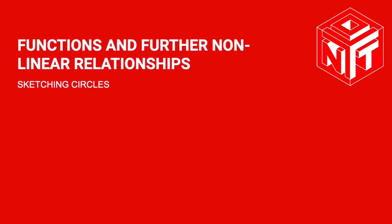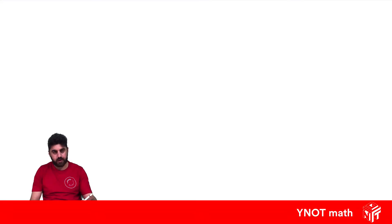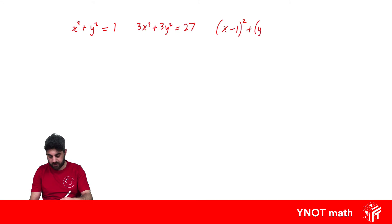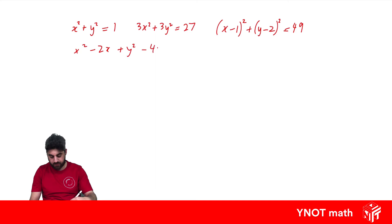When sketching circles, you have a circle function when x squared and y squared have the same coefficients. Examples of circles include x squared plus y squared equals 1, 3x squared plus 3y squared equals 27, x minus 1 squared plus y minus 2 squared equals 49, and x squared minus 2x plus y squared minus 4y equals 44. These are all examples of circles because they both have x squared and y squared with matching coefficients.